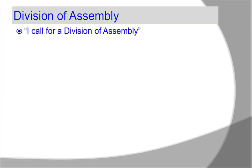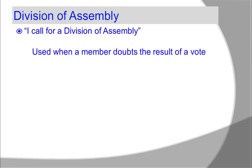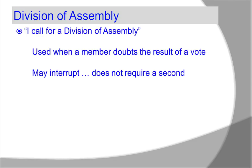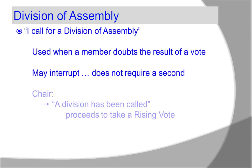What is a division of assembly? 'I call for a division of assembly.' This is used when a member doubts the result of a vote. This motion may interrupt and does not require a second. The chair states 'A division has been called' and proceeds to take a rising vote.